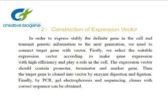Step two: construction of the expression vector. In order to stably express the target gene in the cell and transmit genetic information to the next generation, we need to connect the target gene with a vector. First, we select a suitable expression vector to achieve high-efficiency gene expression. The expression vector should contain a promoter, terminator, and marker gene. Then the target gene is cloned into the vector by enzyme digestion and ligation. Finally, by PCR, gel electrophoresis, and sequencing, clones with the correct sequence can be obtained.